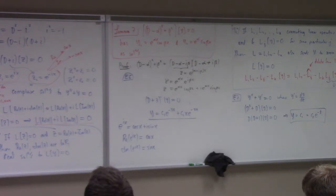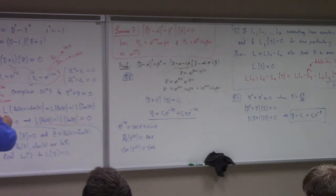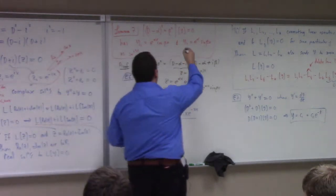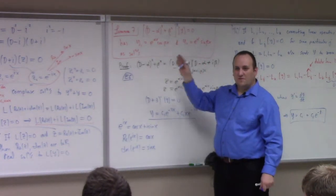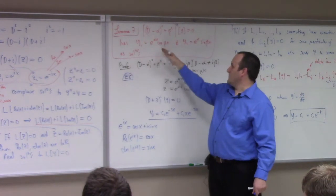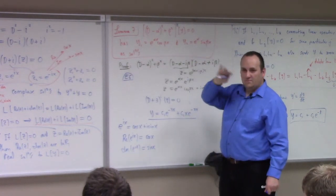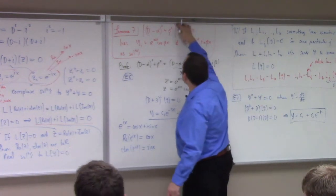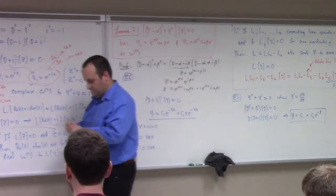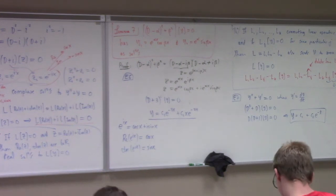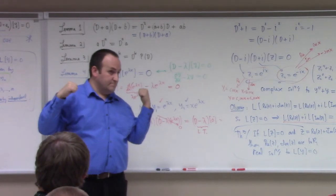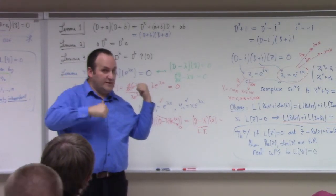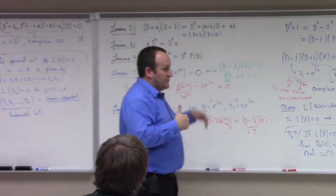What if we have an irreducible quadratic factor squared? We'd get y3 and y4, which are just those solutions times x. We'll talk more about that next time. It's important to understand this because we're going to develop the method of annihilators, which is basically doing this backwards. So take ownership of what we did today — especially Lemmas 5, 6, and 7. These are important.